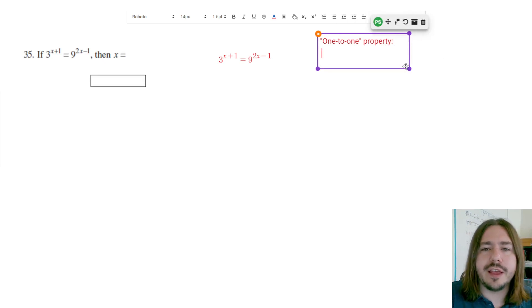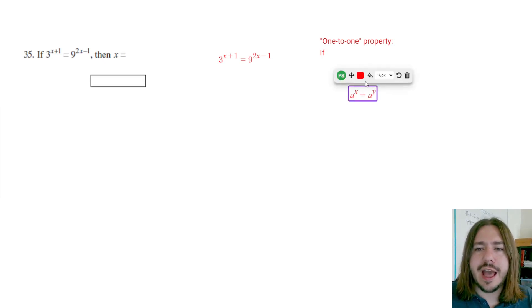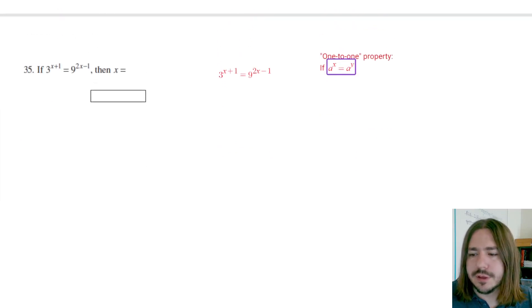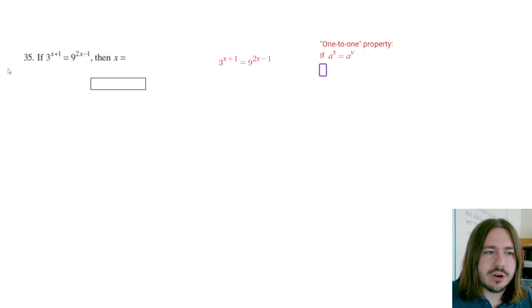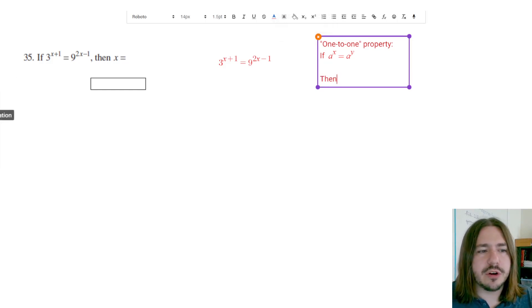And so basically what it says is if you have, let's say a to the x equals a to the y. So in other words, if you have two equal powers, and the bases are the same, then you can say that the exponents are equal to each other.